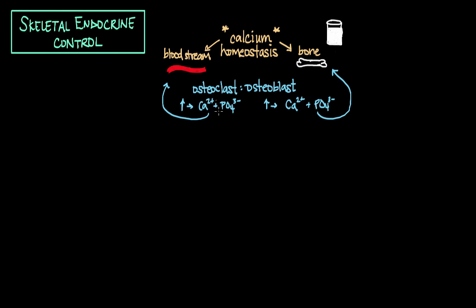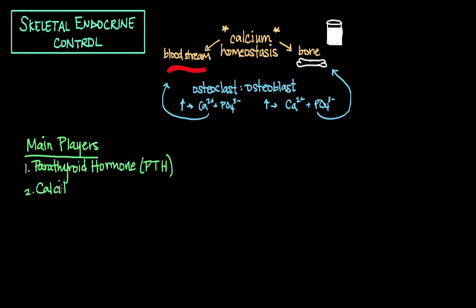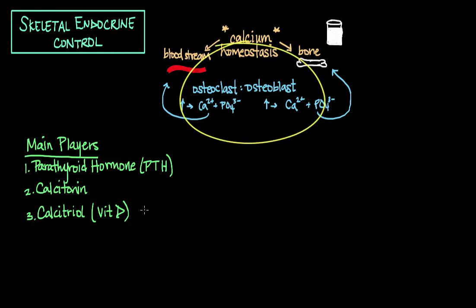The main players responsible for maintaining calcium homeostasis — the balance between calcium and phosphate in the bloodstream and in bone — are parathyroid hormone, calcitonin, and calcitriol, which is the active form of vitamin D. These hormones help regulate the amount of calcium absorbed from the gut or reabsorbed from the kidneys, and they affect the ratio of osteoclast to osteoblast activity.